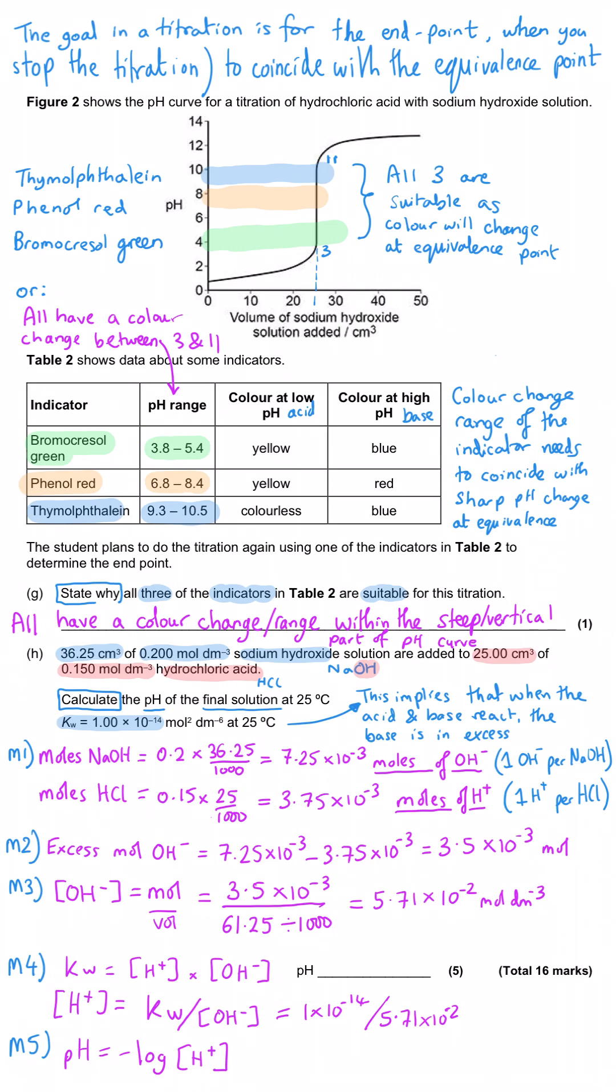We plug that into our Kw expression by dividing 1 times 10 to the minus 14 by the answer we've just got, and that gives us 1.75 times 10 to the minus 13, which is a really small number, which tells us we're going to have quite a large pH. Then we need to plug that into our pH expression. Negative log of the hydrogen ion concentration that we've just got gives us a final answer of 12.76. I do recommend giving to two decimal points because that's a really good habit for pH calculations. When the pH is greater than 10, they're usually quite forgiving and allow it to be to three significant figures, so 12.8 would still get you that mark.